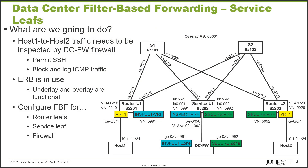Here is our topology. We have a few different devices: the two router leaves — router L1 and router L2 — and the service leaf, which is service L1. There are other learning bytes covering the configuration of router L1, router L2, and the DC firewall, and another covering verification of filter-based forwarding in a data center.